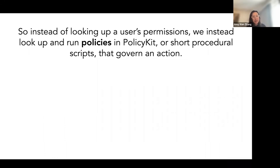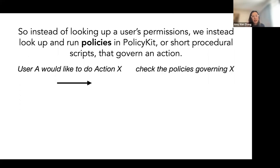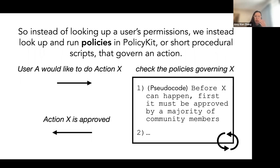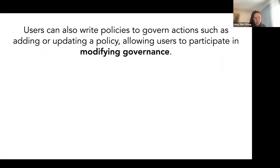At a high level, instead of looking up a user's permissions in a permissions table, PolicyKit checks policies written in PolicyKit that describe the procedure for handling a proposed action by a particular user. Here's an example in pseudocode: before X can happen, it must first be approved by a majority of community members. You can imagine writing a script that checks for that information. If the policy passes, the action is approved — a slightly different way of doing things.